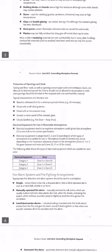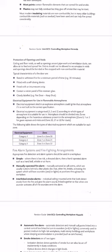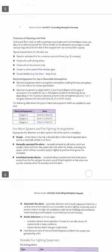Electrical equipment sited in an explosive atmosphere could ignite that atmosphere if not built to the correct specification. Electrical equipment must be appropriate for which type of atmosphere it is used in. Workplaces should also be divided into zones depending on the hazardous substances present. Combustible materials such as gas should be separated from items that could ignite fire, such as paper or wood.